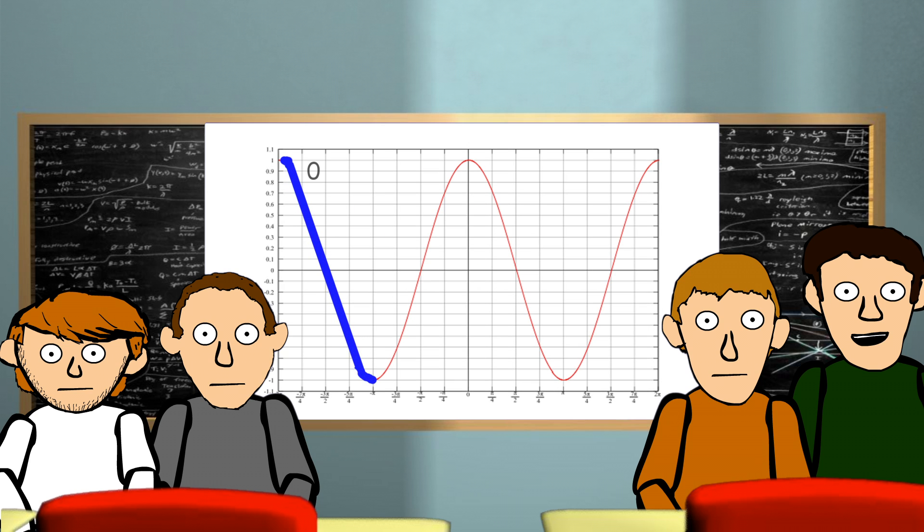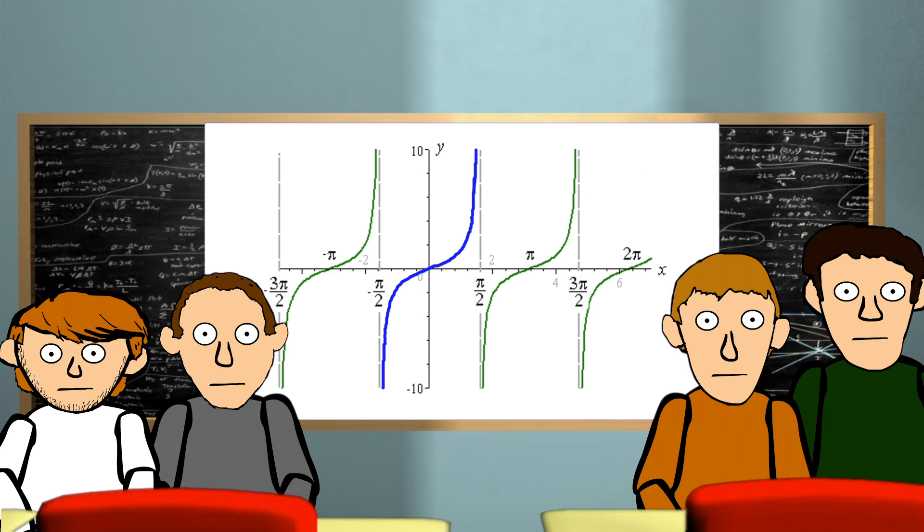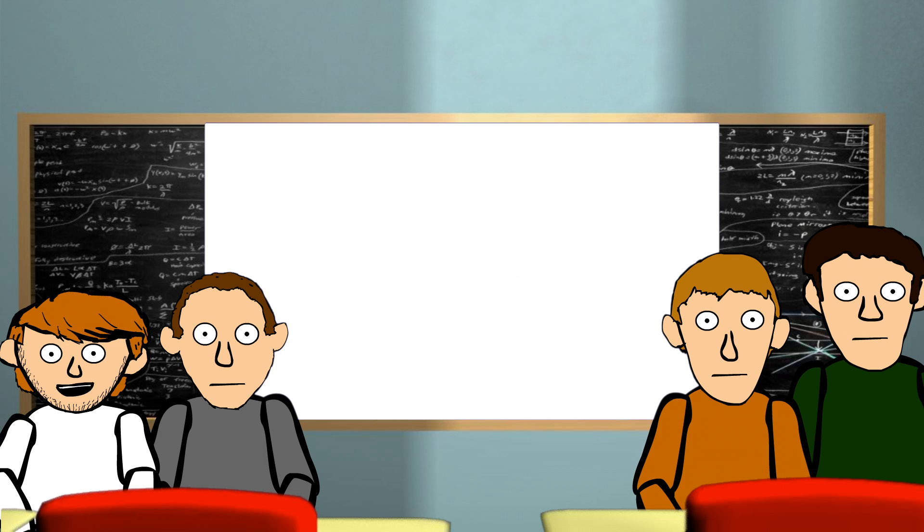The domain restriction for cosine is 0 to pi, or the top half of the unit circle. And the domain restrictions for tangent is negative pi over 2 to pi over 2, or the right side of the unit circle. Now that we know about functions and their inverses, we can begin to find exact values of inverse trig functions.